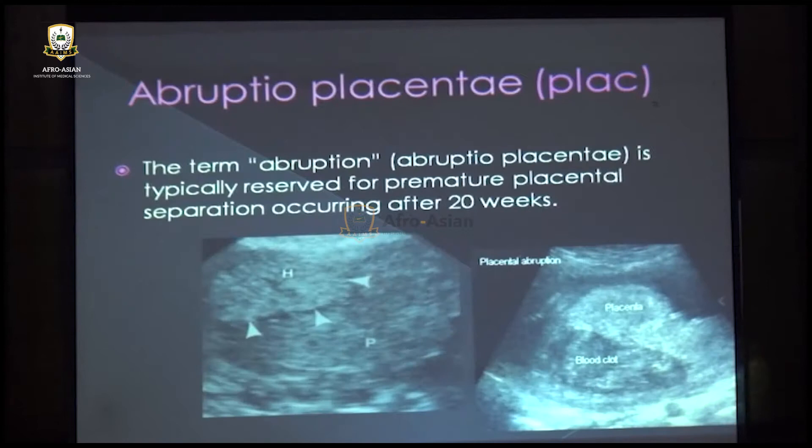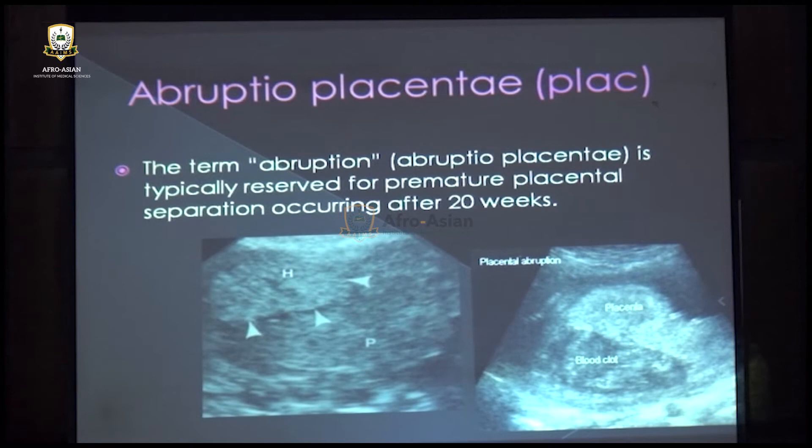Abruption placenta is the term for placental separation after 20 weeks of gestation. In early cases it may be missed because the bleeding is hyperechoic and isoechoic to the placenta. This is a case of abruption placenta as a cause of vaginal bleeding.